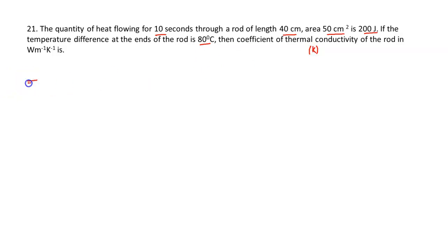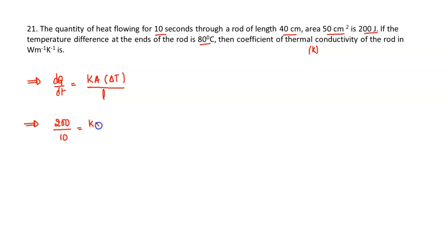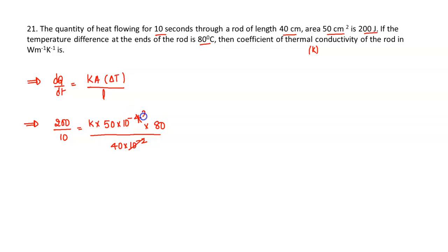Let us consider the equation of conductivity. The equation is dQ/dt = kA × ΔT / L. Now substituting all the given values: dQ is 200 joules, dt is 10 seconds, area is 50 centimetre square — convert to metre square: 50 × 10⁻⁴ — delta T is 80, and L is 40 centimetres, i.e., 40 × 10⁻². Simplifying the powers of 10, this gives 10⁻². So we get 20 = k × 0.5 × 2, and those cancel out.